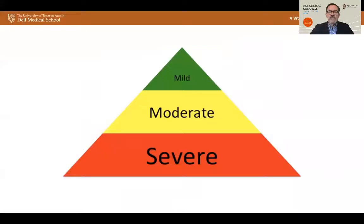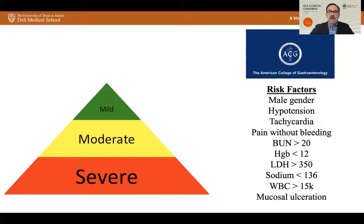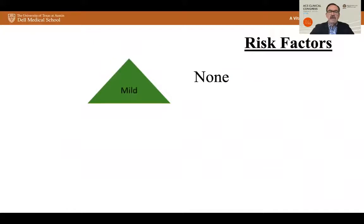Regarding management, we first need to break the disease down into mild, moderate, and severe. The American College of Gastroenterology has identified risk factors that can stratify patients: male gender, hemodynamic instability, pain without bleeding, abnormal labs including BUN, hemoglobin, LDH, sodium, and white count, and mucosal ulcerations. A mild case has essentially no risk factors — a female patient who is hemodynamically stable with pain and rectal bleeding and essentially normal labs.